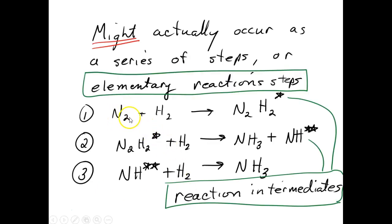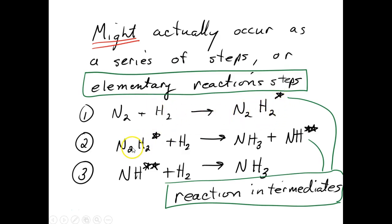First, a nitrogen molecule is going to bump into a hydrogen molecule and form this weird chemical that's very unstable. It doesn't happen very often. And then this unstable thing is going to bump into a hydrogen and immediately turn into these things.